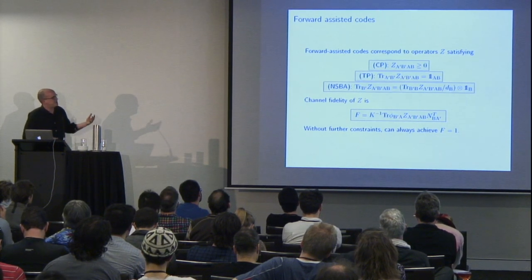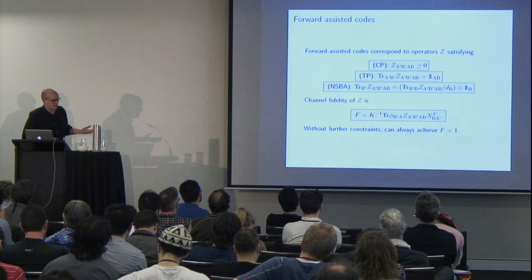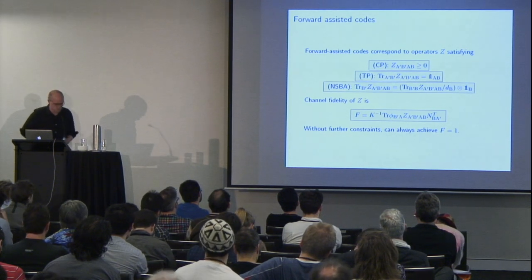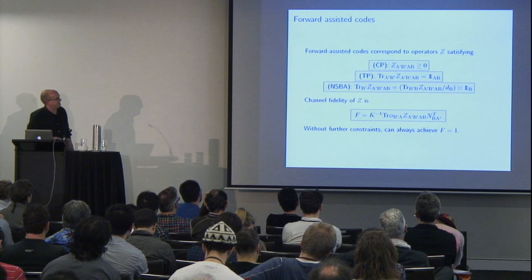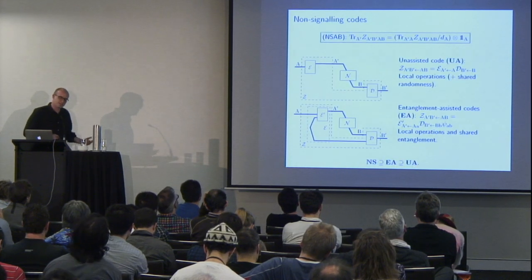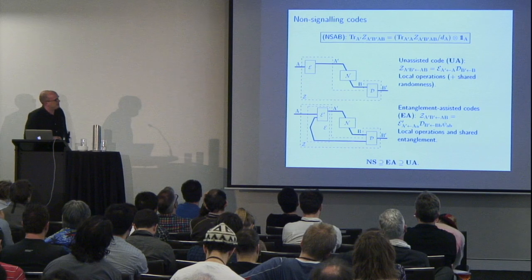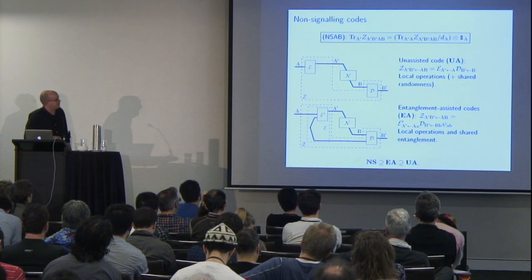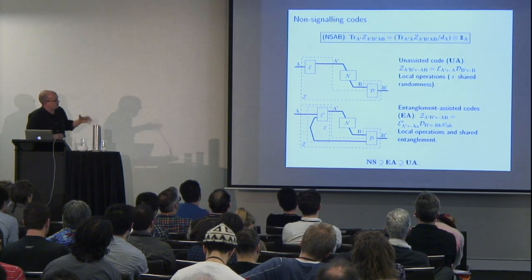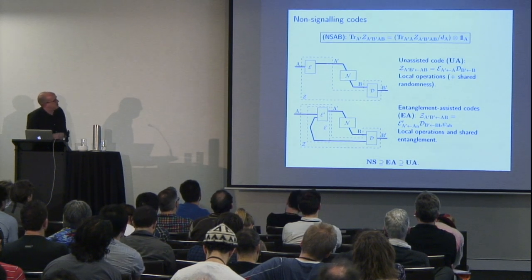If we just want to optimize the performance of these codes, it's already a semi-definite program. But of course, without further constraints we can always achieve perfect fidelity. So the idea is to add some extra constraints which keep it a semi-definite program and which apply to unassisted codes, so we get something a bit more interesting.